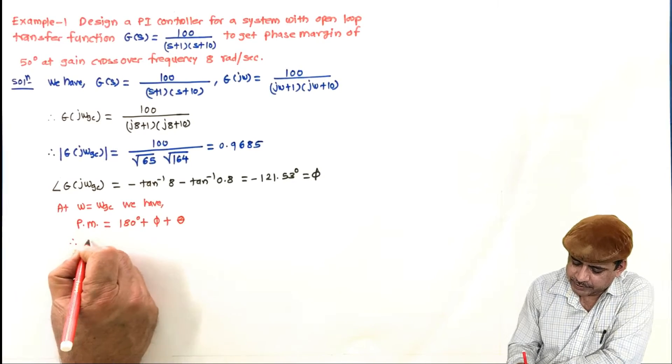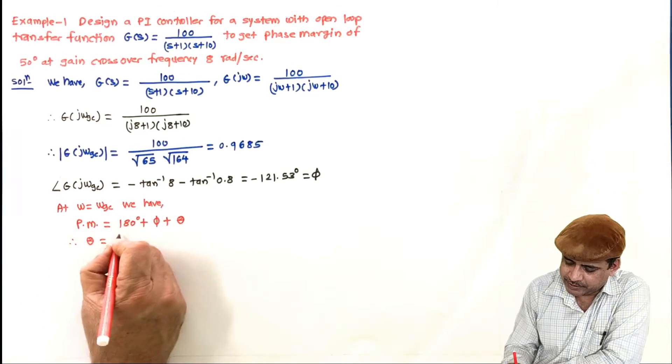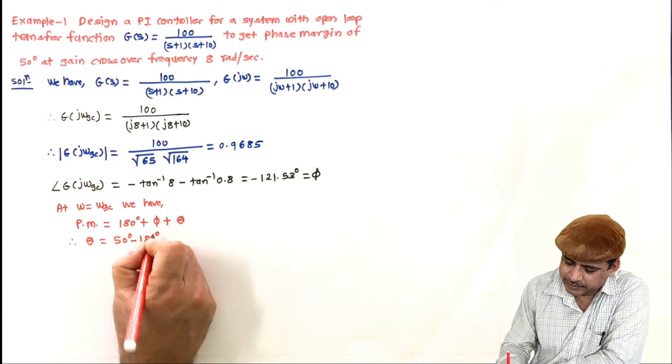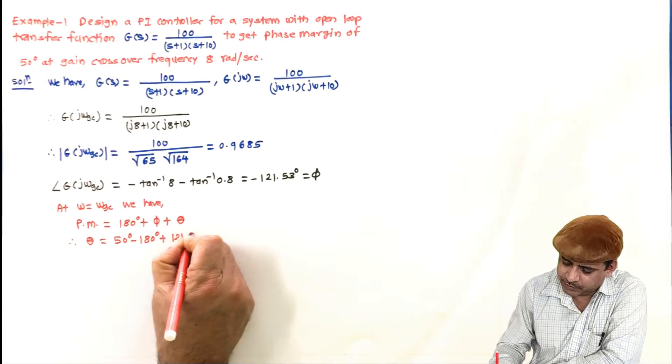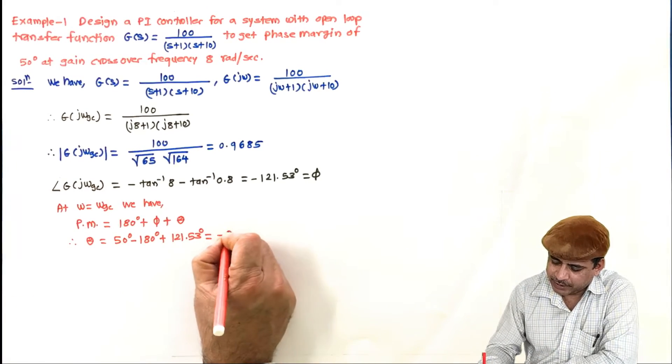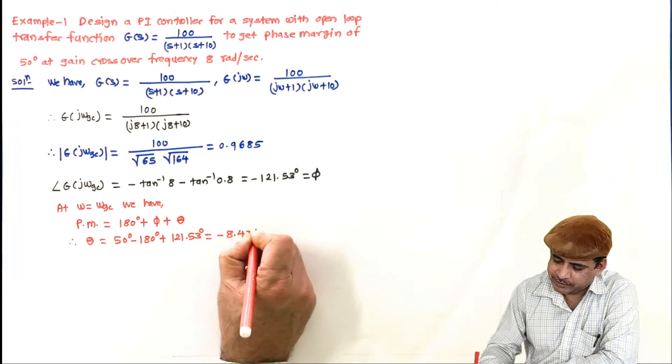So here θ will be equal to, phase margin is 50, so 50° minus 180° plus 121.53°, which is coming minus 8.47 degrees.